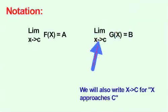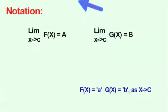We will also write x arrow c for x approaches c. Again, f of x equals a and g of x equals b as x approaches c.